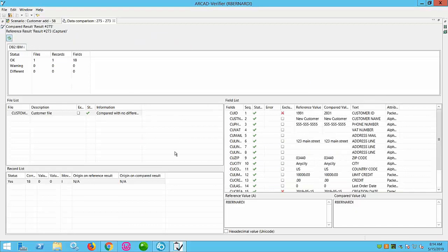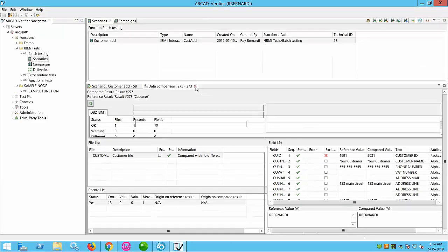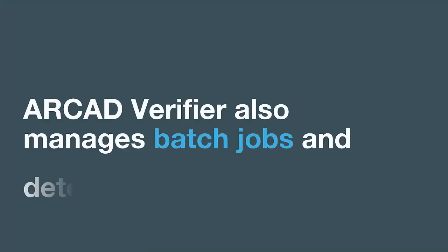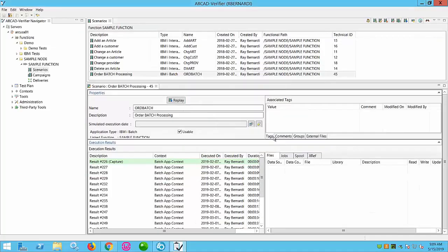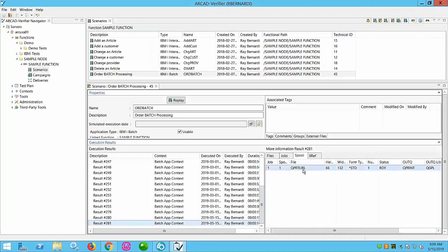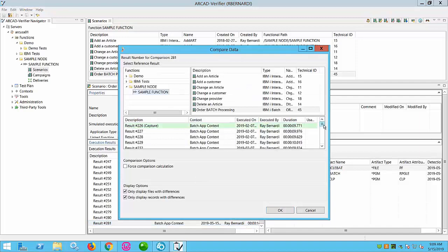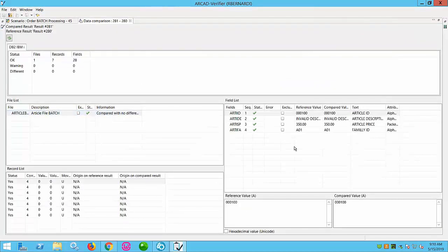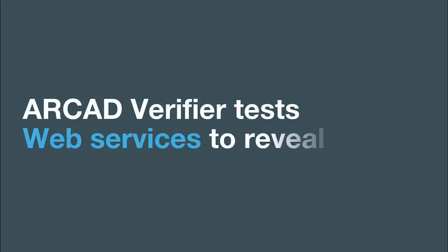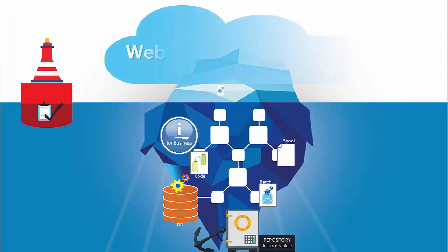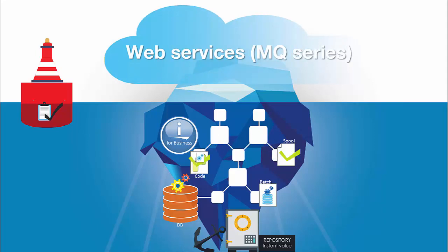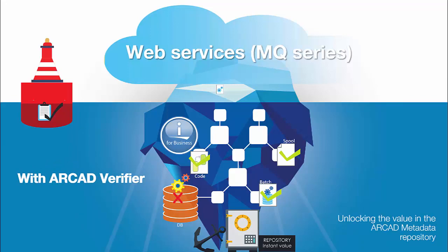Defect reports can be automatically dispatched to QA staff for review after a scheduled test run. Many IBM i apps run mission-critical functionality in batch with no UI whatsoever, but Verifier has a start-stop feature that enables batch testing with ease. Verifier also detects and reports on differences in spool files. Many modern three-tier IBM i apps interact with external systems via web services. Arcade Verifier delivers the same deep defect analysis with asynchronous messages and web services too. Verifier's start and stop diagnostic feature tracks your transactions and all activity deep down in the database to catch defects early.